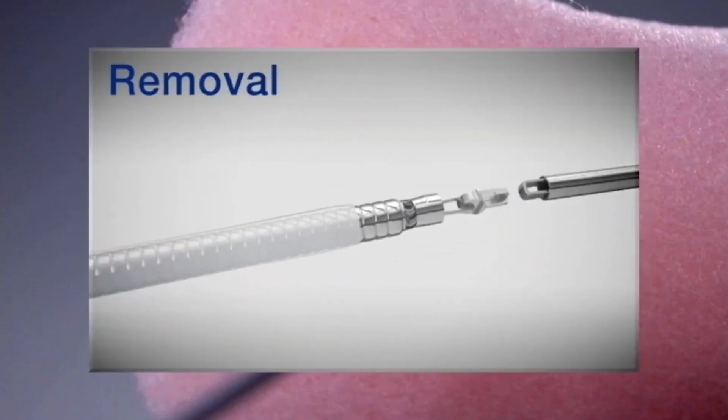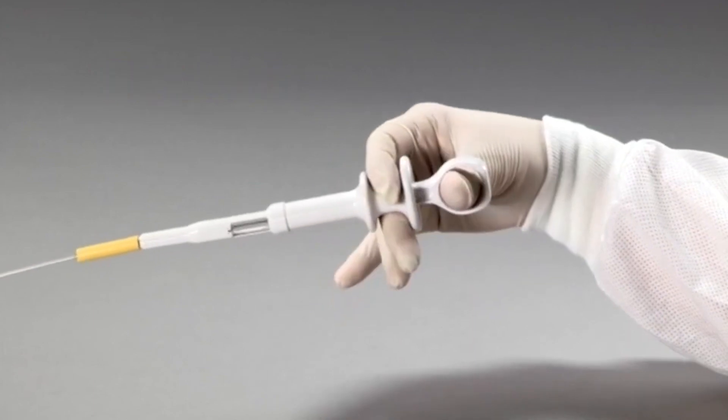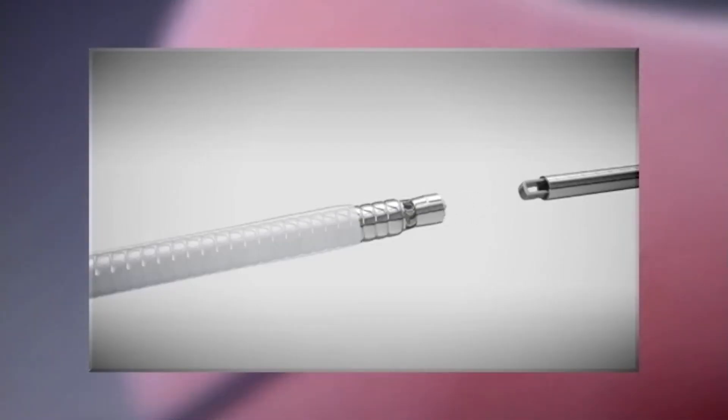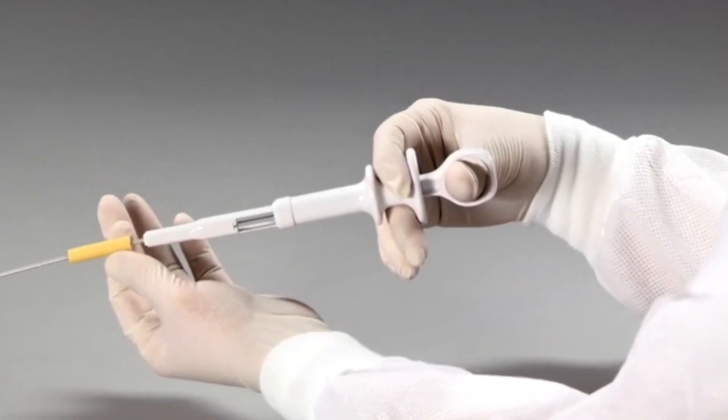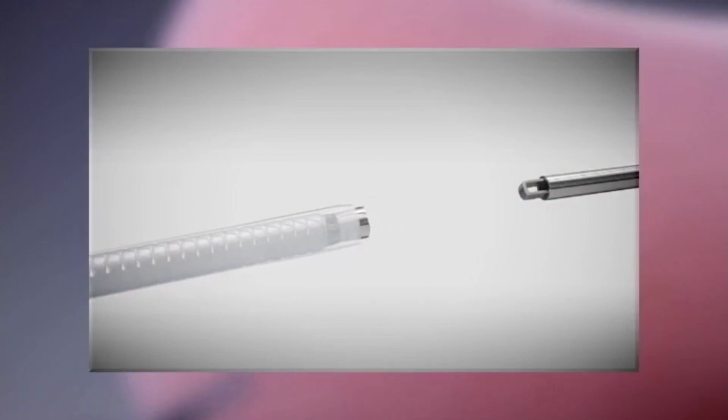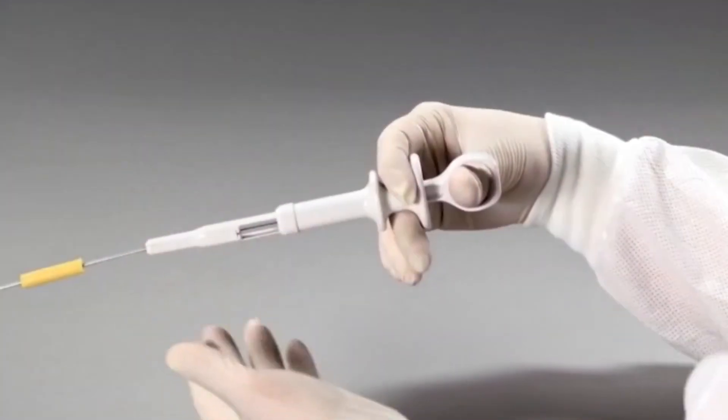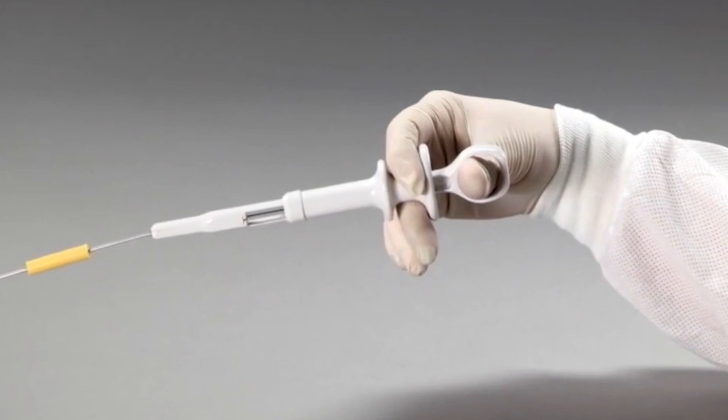Once the clip is detached pull the slider back to ensure that the hook is drawn into the inner sheath. Next pull the yellow cylinder forward to retract the device back into the plastic sheath. This will prevent damage to the endoscope channel as you remove the device.